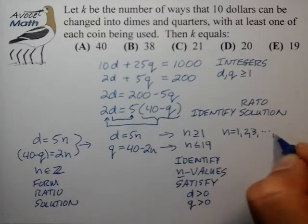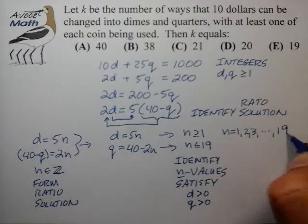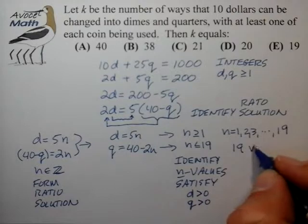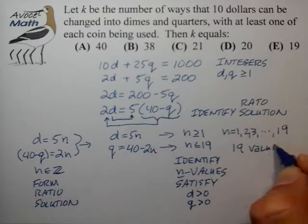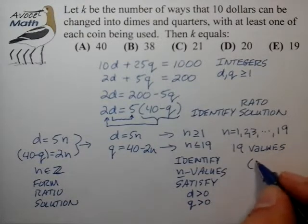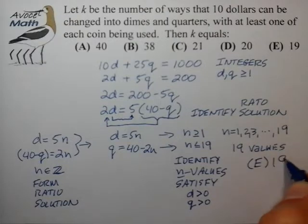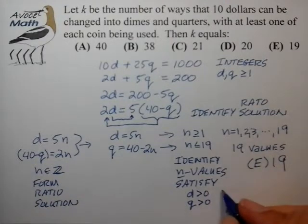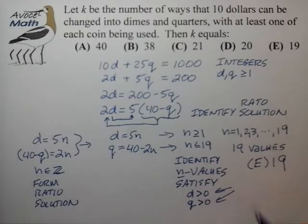All the way up to 19. So essentially there are 19 values total and that leads to the choice E. This last step I typically describe as identifying the n values that satisfy both of these conditions simultaneously.